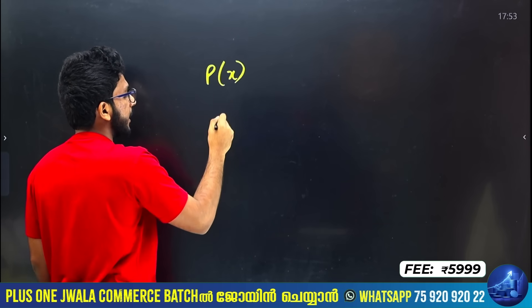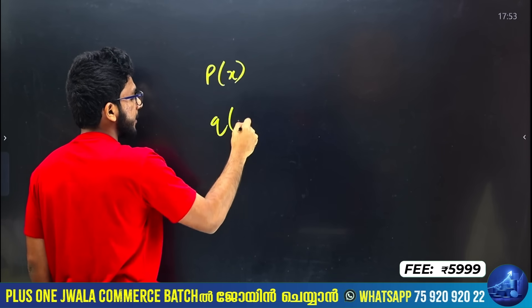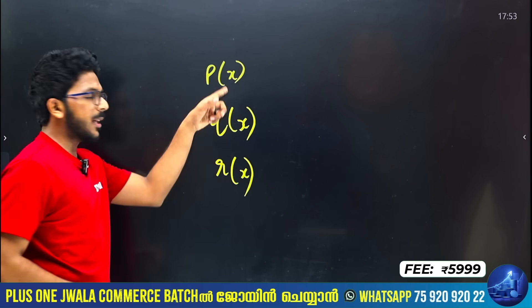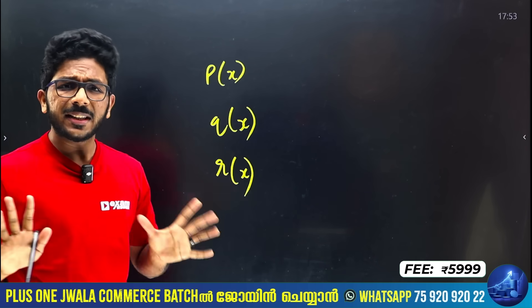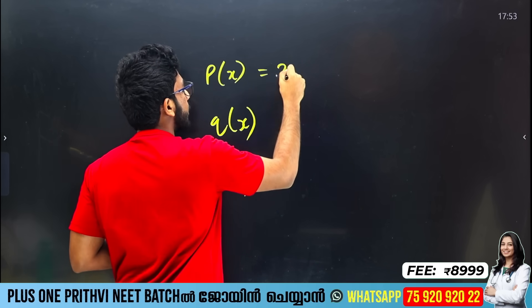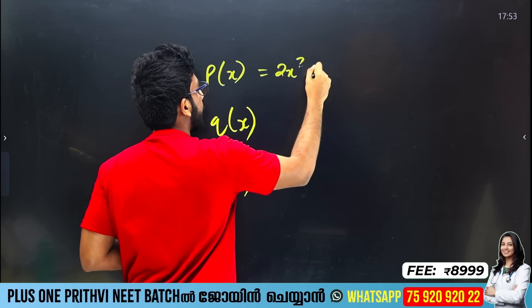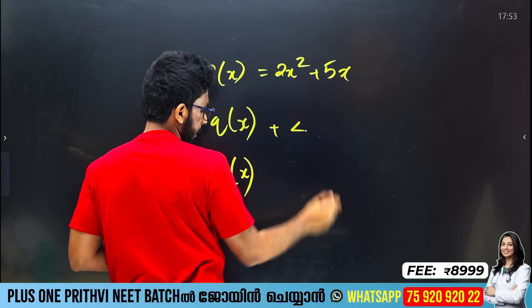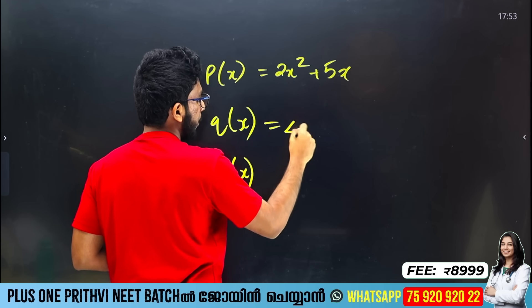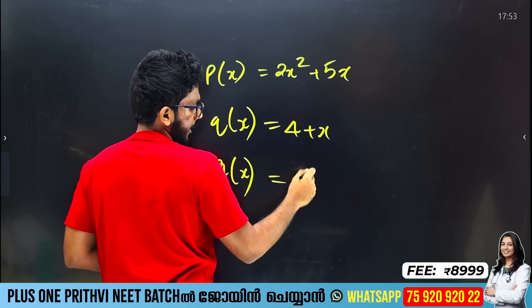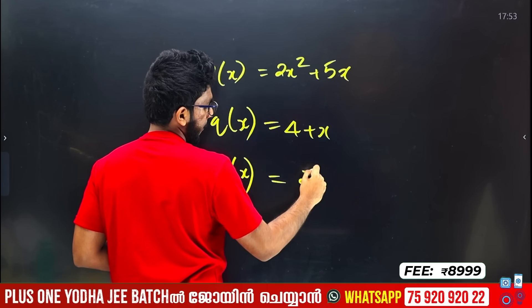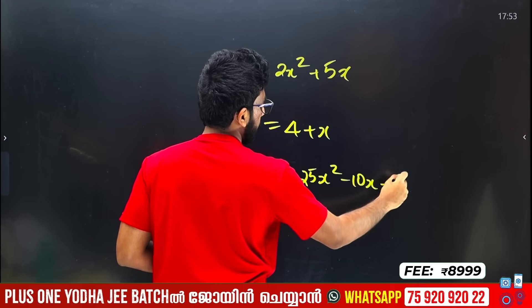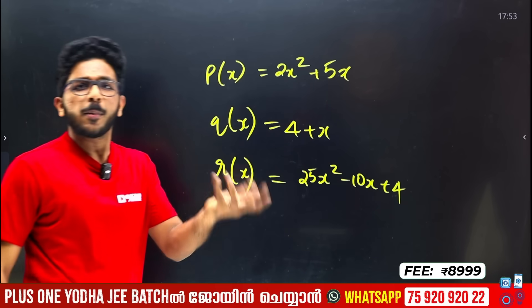P of x, Q of x, R of x — these are polynomials in the variable x. For example, 2x squared plus 5x, or 4 plus x, or 25x squared minus 10x plus 4 — these are all polynomials.